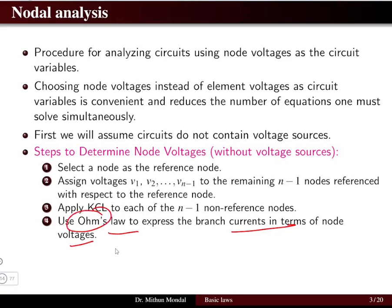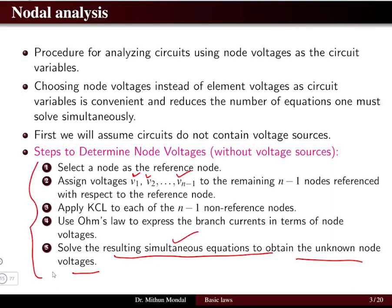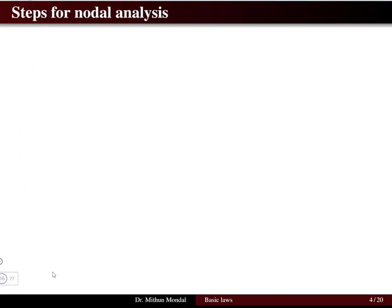Use Ohm's law to express branch currents in terms of node voltages, where voltage equals current multiplied by resistance. The final step is to solve the resulting simultaneous equations to obtain the unknown node voltages v1 through vn-1. These steps are followed for solving any circuit using nodal analysis.